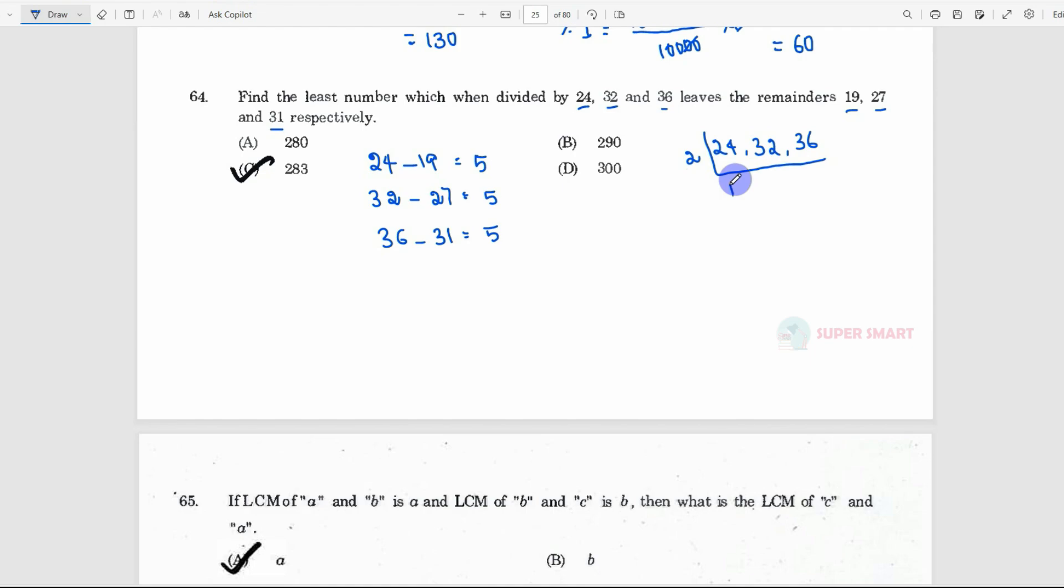We start with 2 tables. 2, 12s are 24, 2, 16s are 32, 2, 18s are 36. Again, we start with 2 tables. 2, 6s are 12, 2, 8s are 16, 2, 9s are 18. Again, we start with 3 tables. 3, 2s are 6, again 8, then 3, 3s are 9. We start with 2 tables. 2, 1s are 2, 2, 4s are 8, 3. We start with 2 tables. 2, 2s are 4, 4, 2s are 8, 8, 2s are 16, 16, 2s are 32. We start with 3 tables. 3, 3s are 9. Multiply: 1, 27, 28.